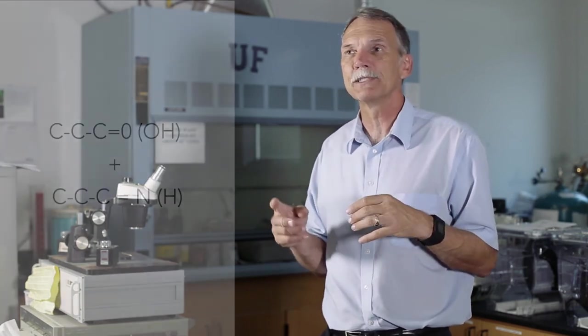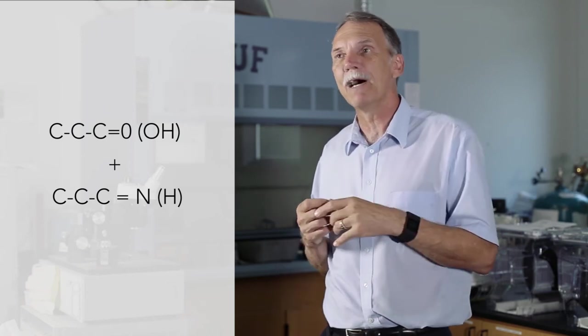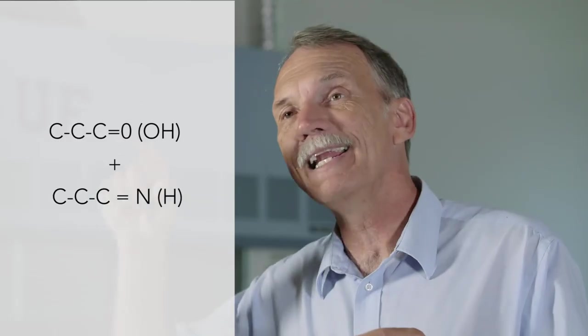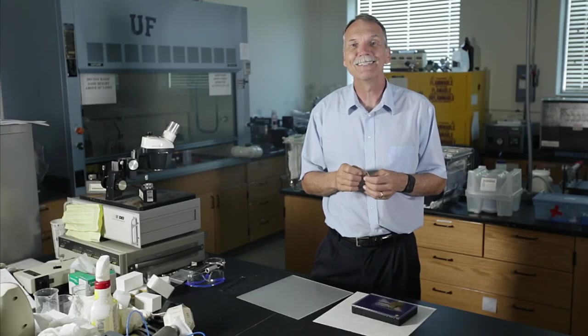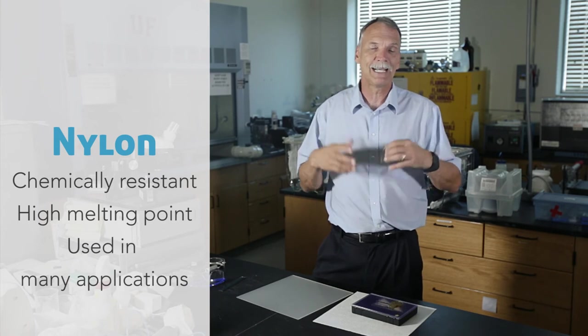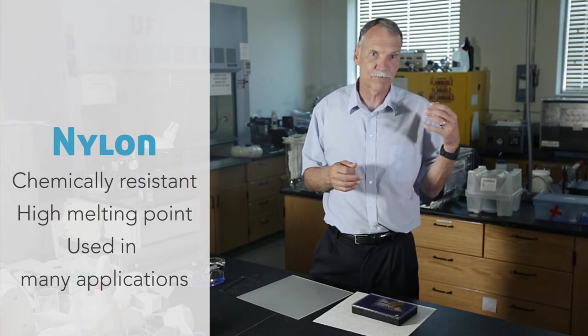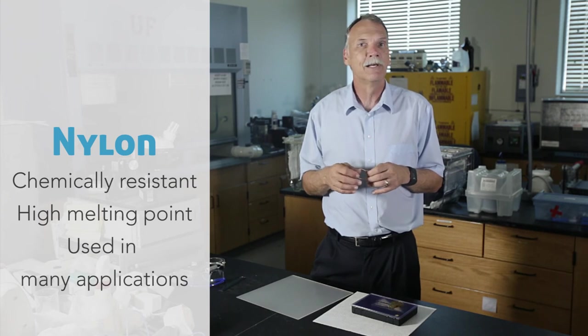At the same time there was another gentleman named Carothers at DuPont. Carothers came up with a very clever idea—he decided to react a series of carbon chains, say six carbons with a hydroxyl group and a double bonded O on it, so this is what we call carboxylic acid, with a diamine, something that had a bunch of carbons and then an NH group on the end, NH2. By doing that he could actually rip off the hydrogen from the NH and the OH from the carboxylic acid and make water, and the chain would actually stitch itself together. What he discovered was nylon. Nylon is an incredibly versatile polymer because it has some properties like it's very chemically resistant, it has a relatively high melting point, and it's used in a lot of applications, everything from nylons that were basically hosiery early on, to stranded fishing line, to other materials.